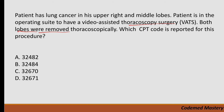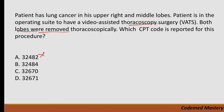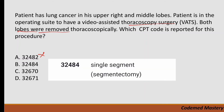Option A is 32482 — removal of lung other than pneumonectomy, two lobes (bilobectomy). In our question both lobes were removed, but the question specifies video assisted thoracoscopy surgery, and code 32482 is only for removal of two lobes — VATS is not included in that code. We cannot code it accurately, so we eliminate option A. Option B is 32484 — single segment segmentectomy — but here we have a bilobectomy with VATS, so we eliminate option B as well.